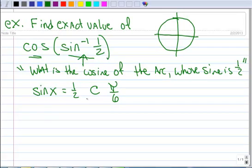So the sine is 1 half at pi over 6. So now the problem becomes, what's the cosine of pi over 6? And you know that is square root of 3 over 2.